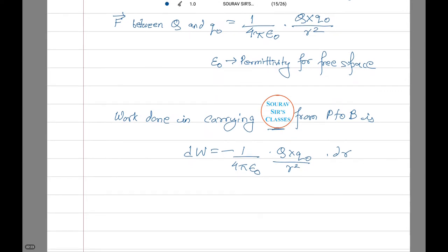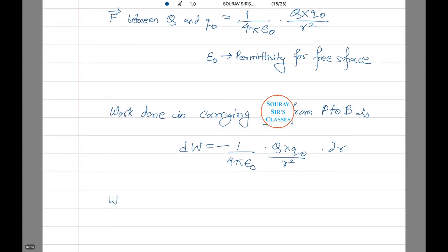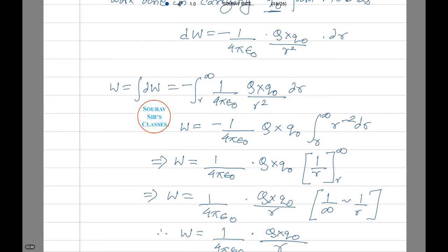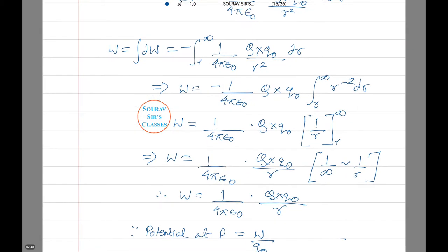Similarly, work done in carrying to infinity is W equals integration of dW. I will do the calculation so it becomes faster for you to see. 1 by 4πε₀ Q into Q₀ by R² dr whole integration. And this is the calculation that will be done in order to show that W equals 1 by 4πε₀ into Q into Q₀ by R.